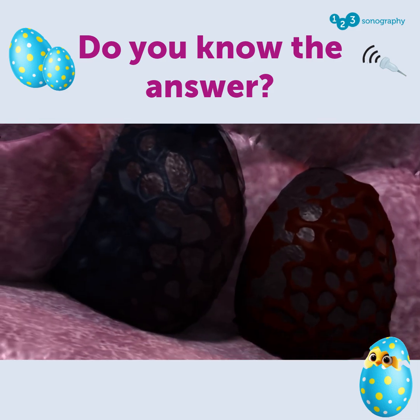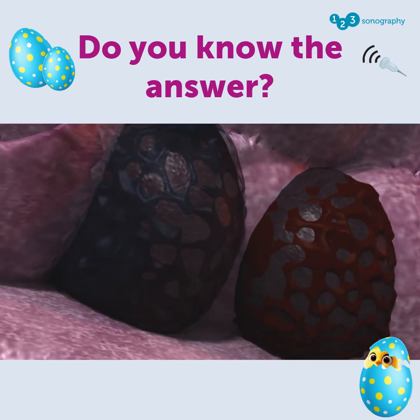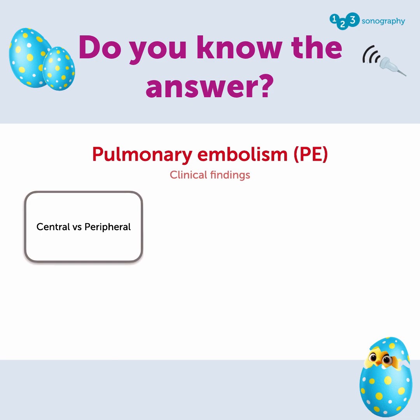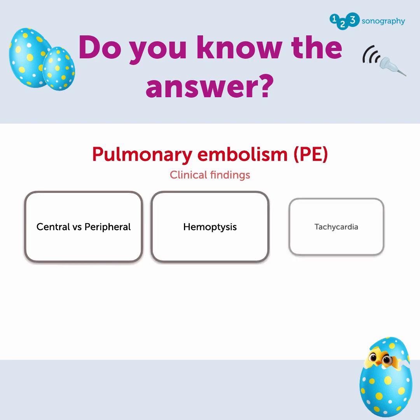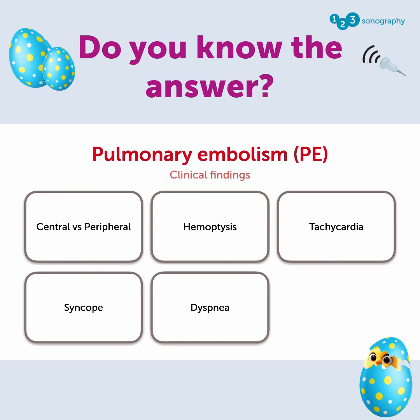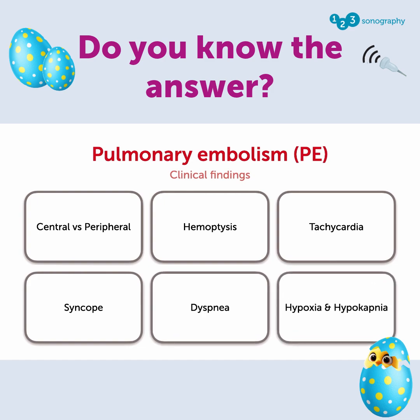Pulmonary embolism can be central or peripheral, depending on where the thrombus actually gets stuck. Patients can present with coughing of blood or hemoptysis, tachycardia, even syncope, and of course dyspnea with a reduction in oxygen saturation and a reduction in CO2 measurements.